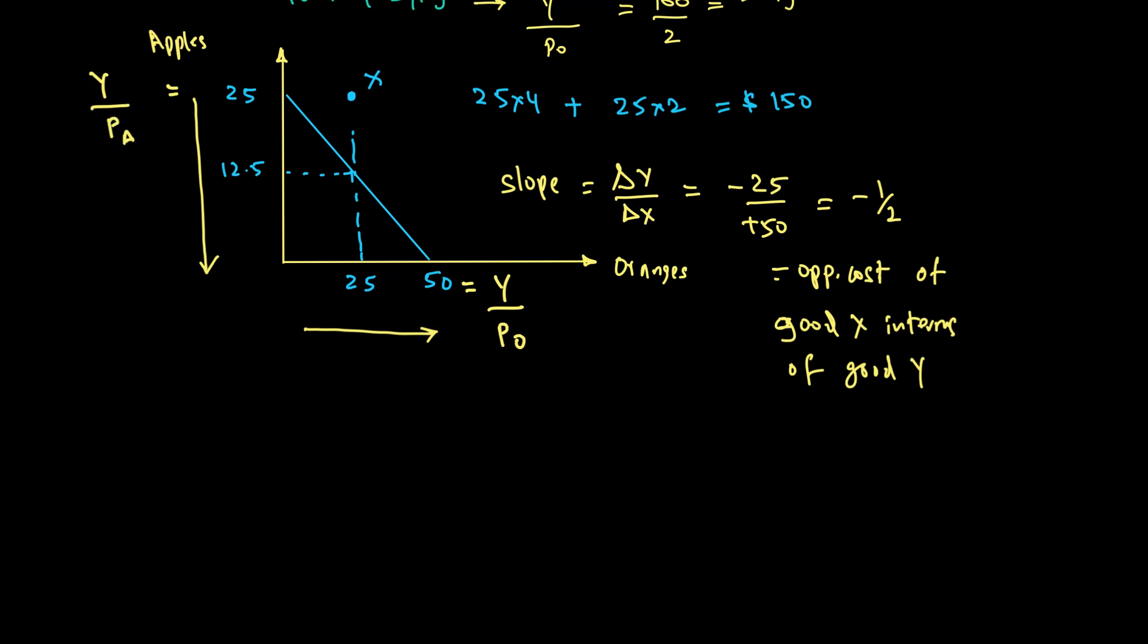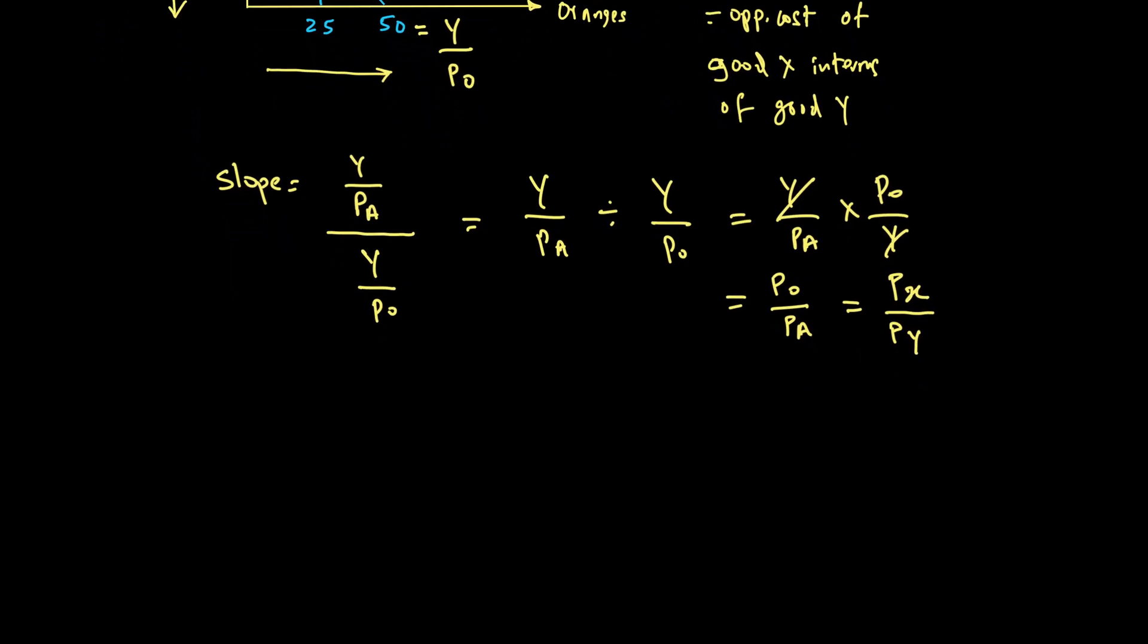Now using this information, I found that 25 can be written as Y over PA. So my slope is Y over PA divided by the change in my X-axis, which is Y over PO. If I rewrite this, it's Y over PA times PO over Y. Y and Y cancel and I'm left with PO over PA, which is price of X-axis over price of Y-axis.